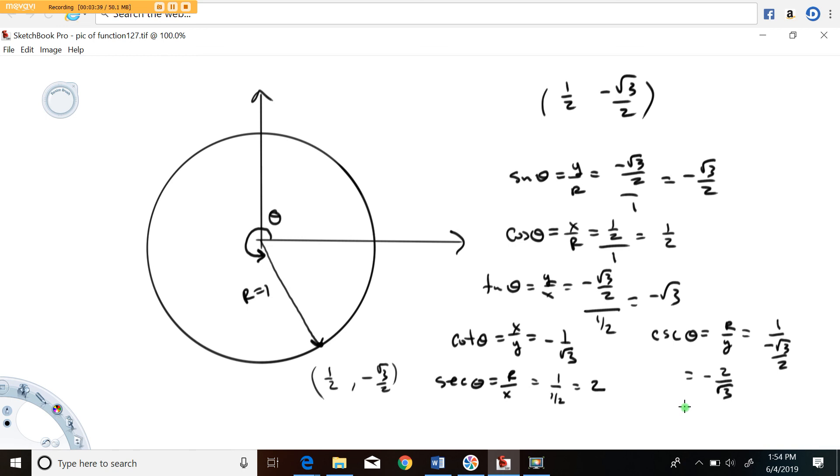cotangent x over y, secant is r over x, cosecant r over y, put in the values.